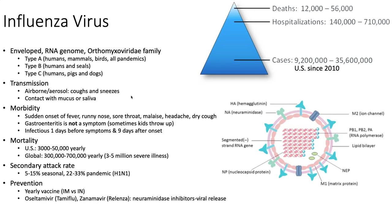Moving on from MMR to influenza — there are three types, all orthomyxoviridae, all RNA genomed, all enveloped. Type A is the one that causes pandemics. Types B and C can still make you sick and could potentially kill you, but type A is super infectious and basically every pandemic or epidemic strain is type A. Classic transmission is mucus and saliva. Everybody's had the flu — fever, runny nose, you feel really gross. The stomach flu is not influenza — that's usually a bacteria causing some gastrointestinal problem. Calling something the stomach flu is not correct.